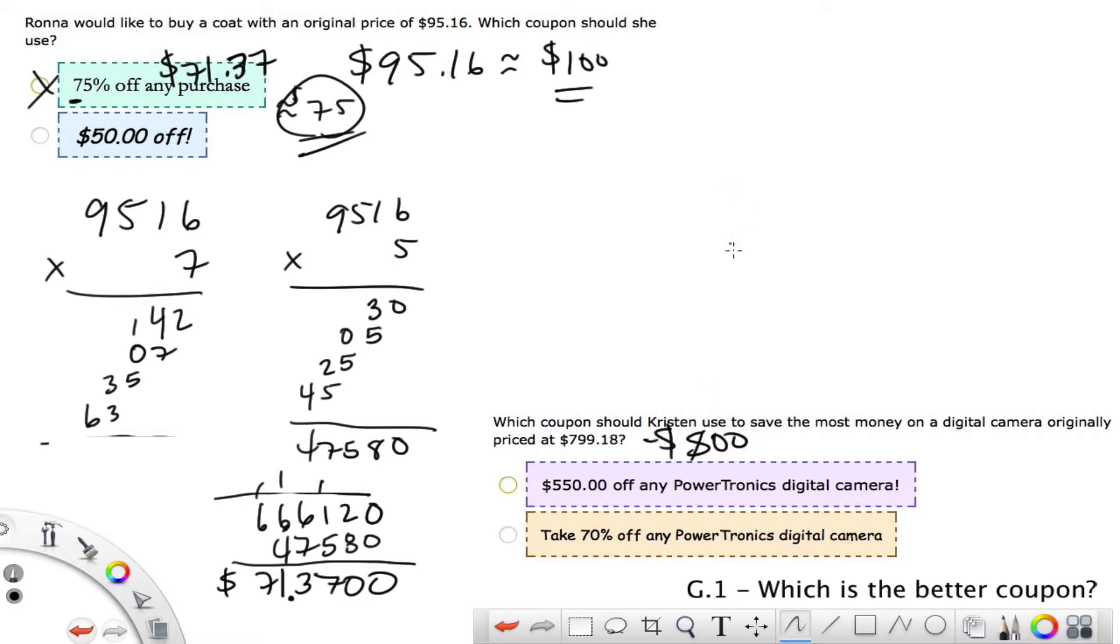So 800. Now 70% as a decimal is 0.7. So 800 times 7. Well, that's going to be 7 times 0, 7 times 0, 7 times 8. This is just 5,600. 5,600 doesn't make any sense because the thing might cost 800. Remember, we have this decimal here. So we know it's got to be somewhere between half and all of it. So somewhere between 400 and 800. So sure enough, it's got to be $560. So again, 550 versus 560, it's got to be this percentage.